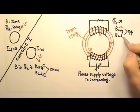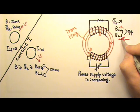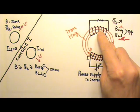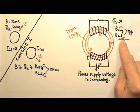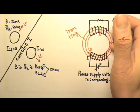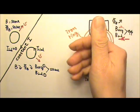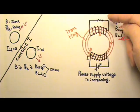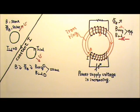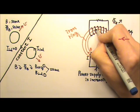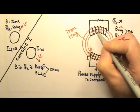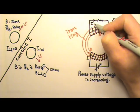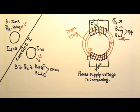That means the induced current has to produce a magnetic field in the opposite direction. So inside this coil, I need my four fingers to go to the left. That means the current must go up in the front and down in the back. Therefore, the induced current would go to the right in this resistor.